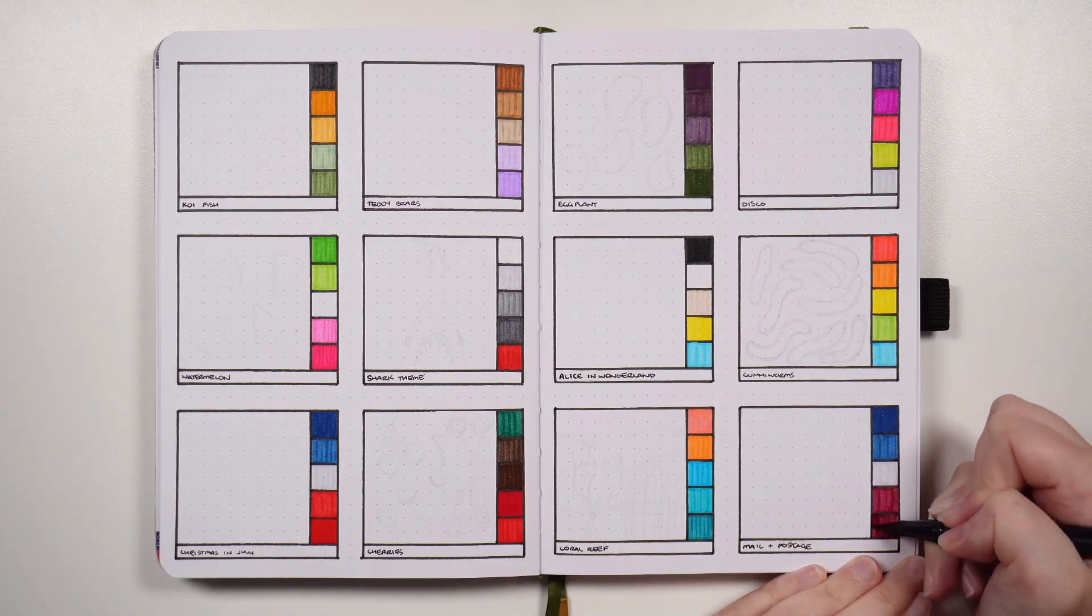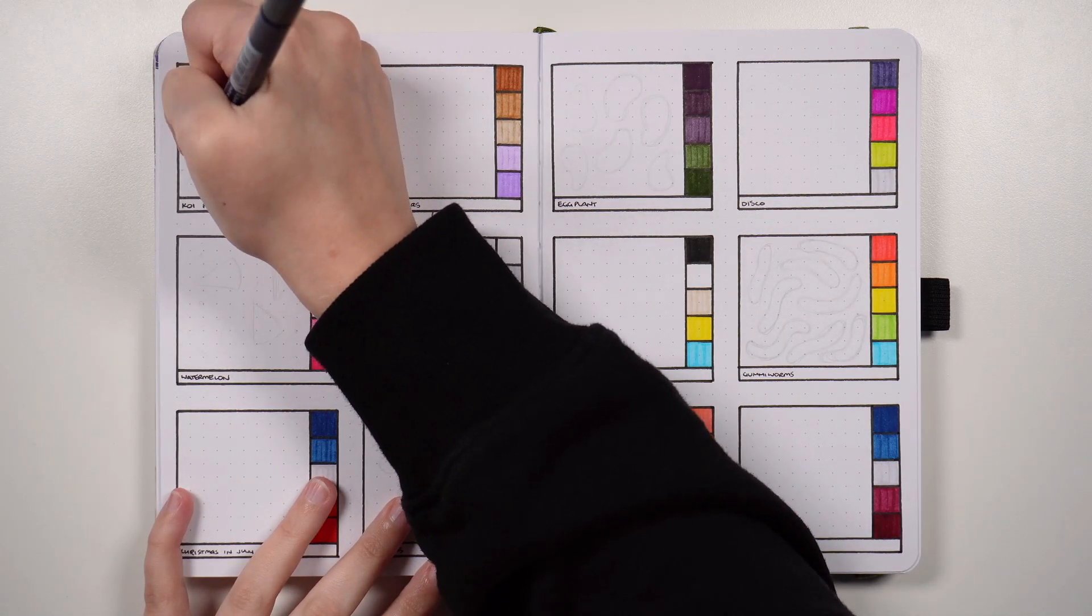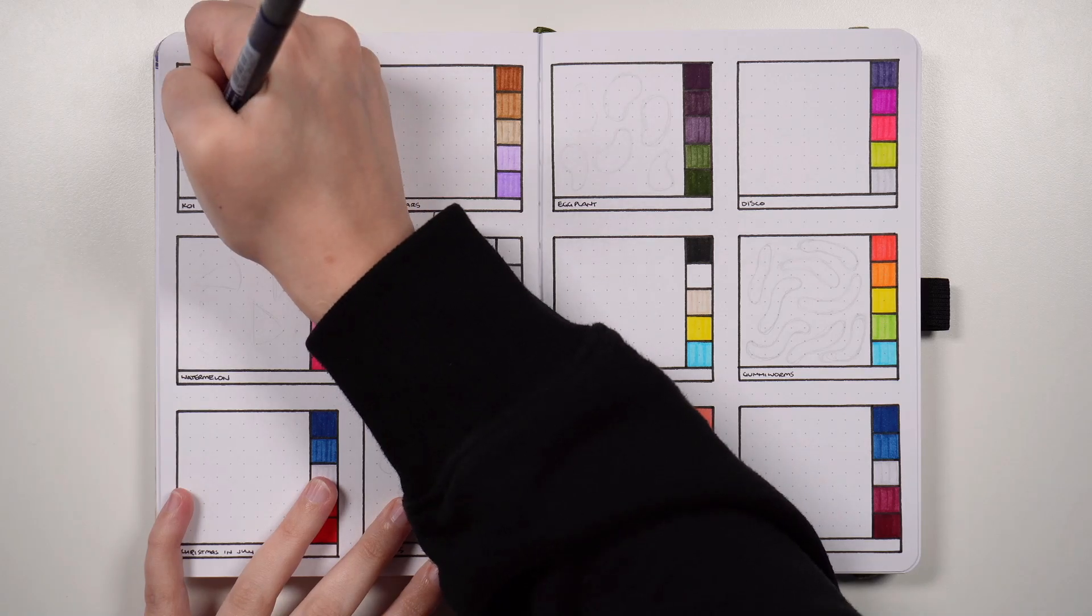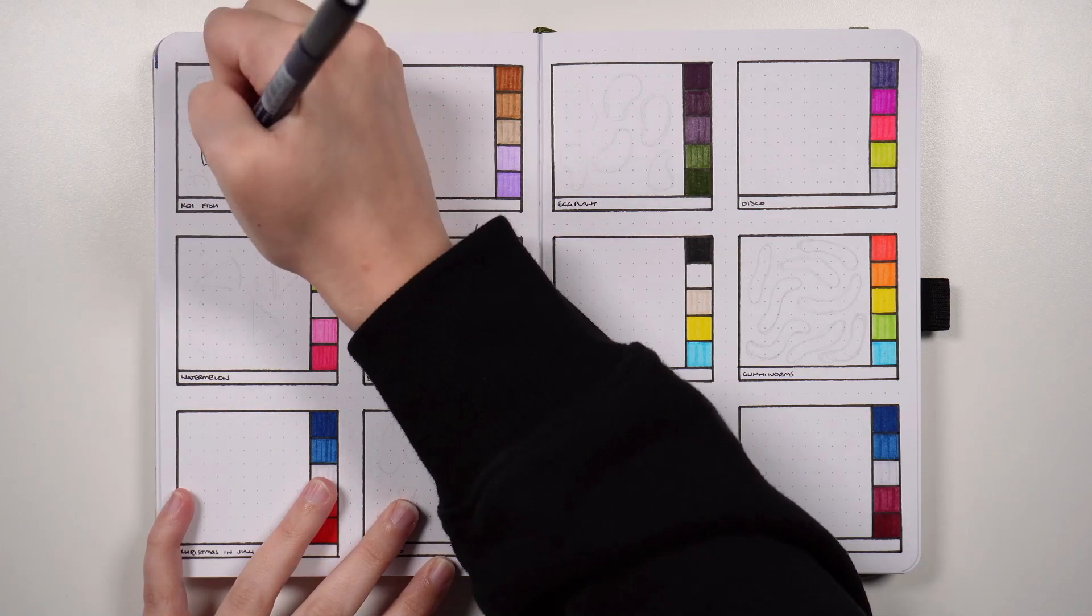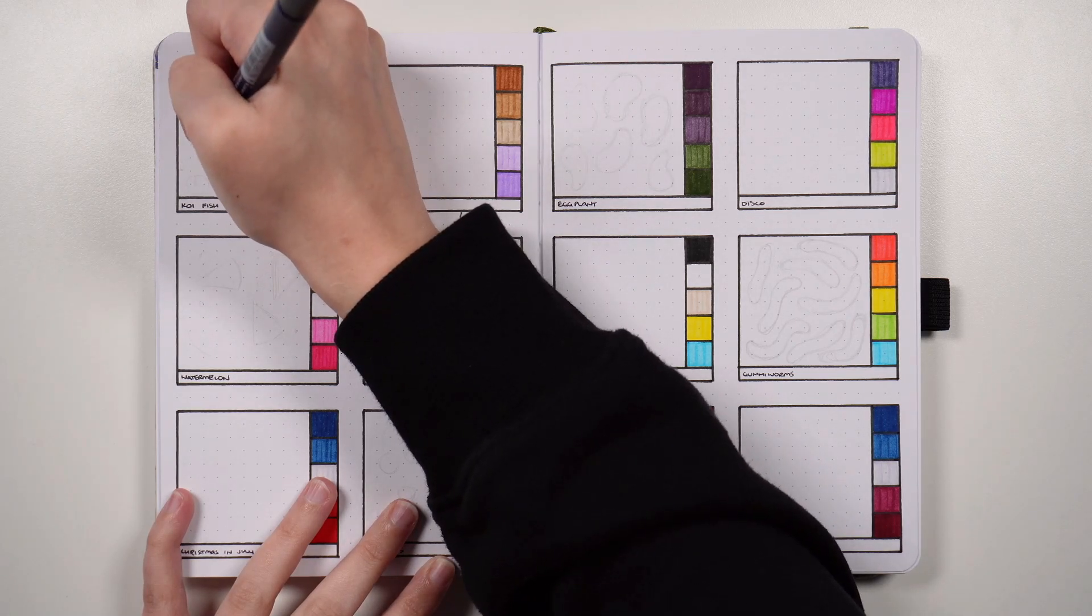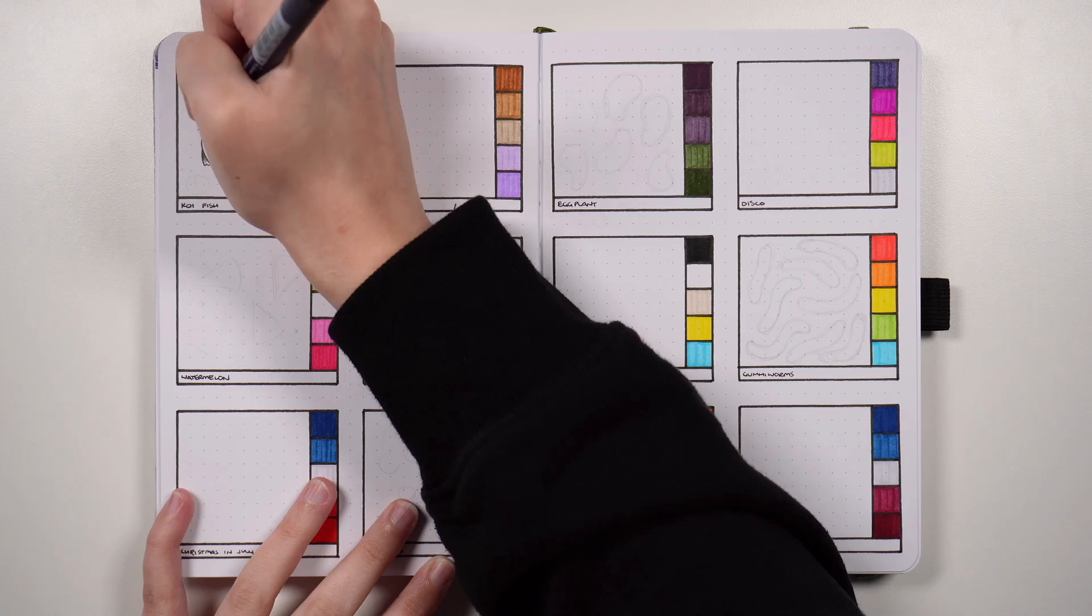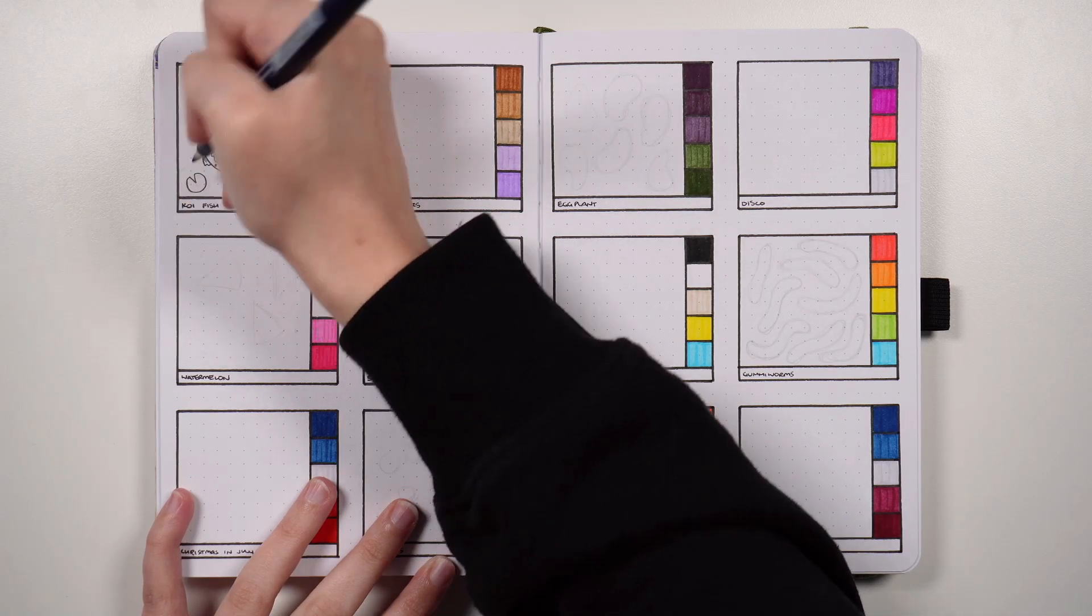So our first theme idea is that of koi fish as related to koi fish day. I love koi fish themes so much. I did one for myself in November a couple of years ago and it's actually surprisingly easy to draw koi fish once you kind of know the basic shapes to use. I've gone with a fairly typical color palette for this one so some oranges, black, green if you include lily pads.